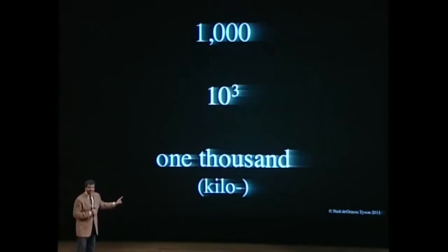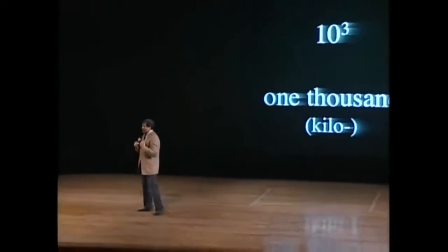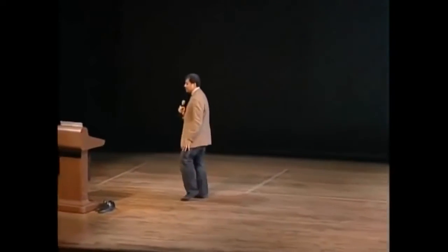B for basement, S-B, sub, S-B-B. Can I buy a vowel, please? Like, what are you doing there? We have perfectly good nomenclature for going below the lobby level. They're called negative numbers. We know how to do this. It is well understood. But, of course, this is America.